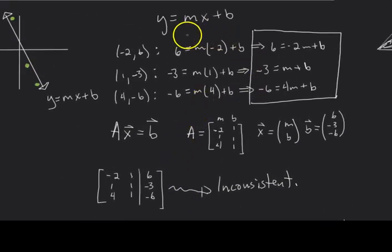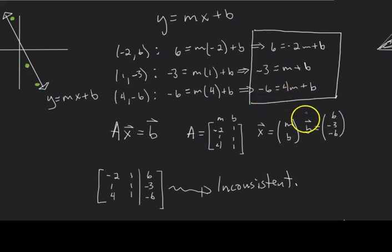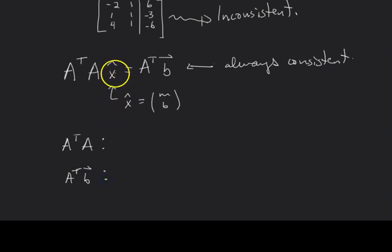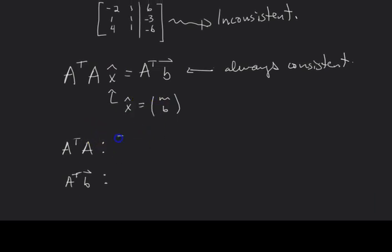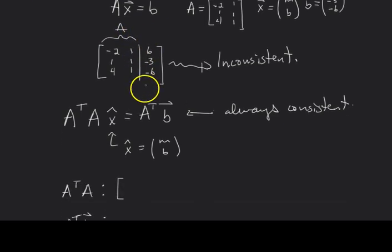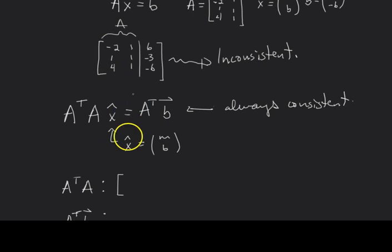So the process is: write y = mx + b, plug in your data points to get your equations, find your A matrix (coefficients to the unknowns m and b), find your b vector (the constant side), and then plug into A^T A x̂ = A^T b. We need to compute A^T A and A^T b. We know A — it's the matrix with m-column [-2, 1, 4] and b-column [1, 1, 1]. So A^T has first row [-2, 1, 4] and second row [1, 1, 1], and we multiply that by A.